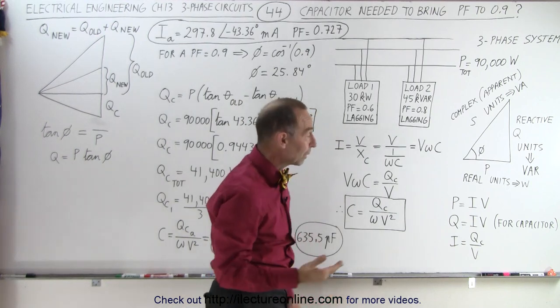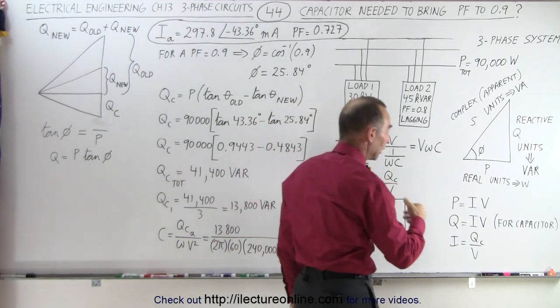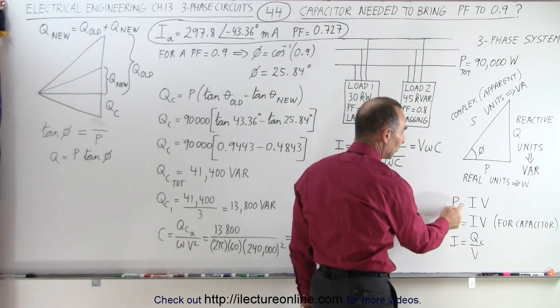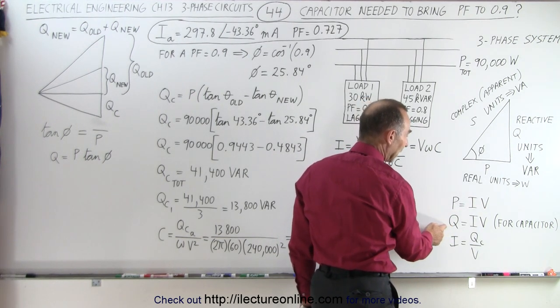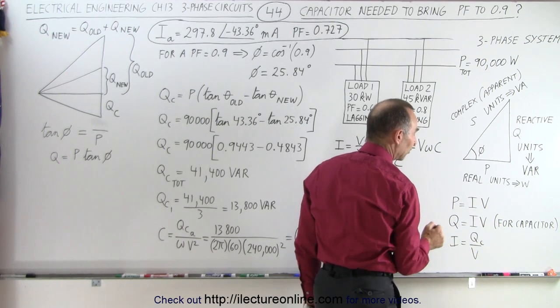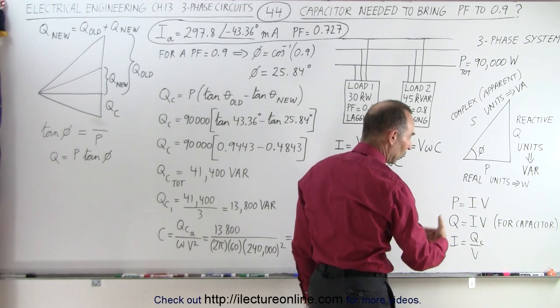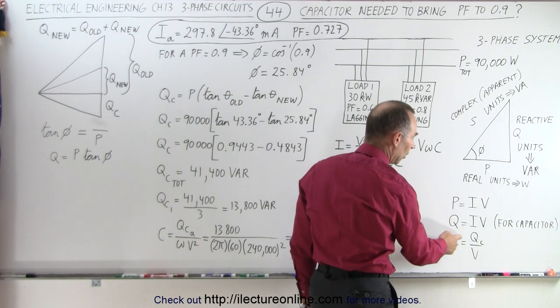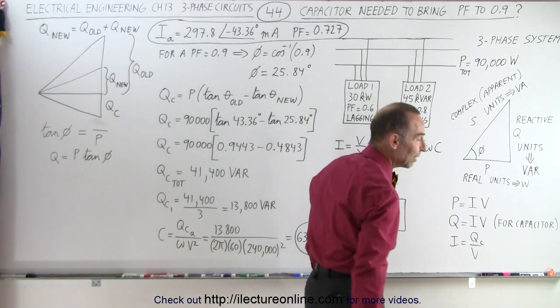We also know that we can relate the reactance to the power of the circuit, so if the power is I times V, then the reactance for a capacitor is also I times V, or the current, if we only talk about the reactive power of the capacitor, will be the reactive power divided by V.